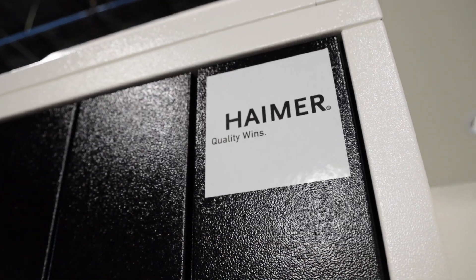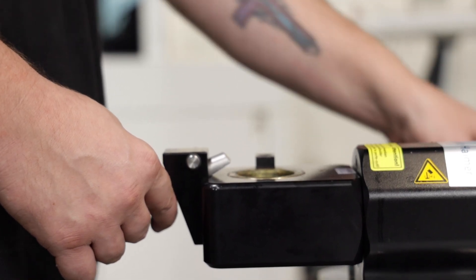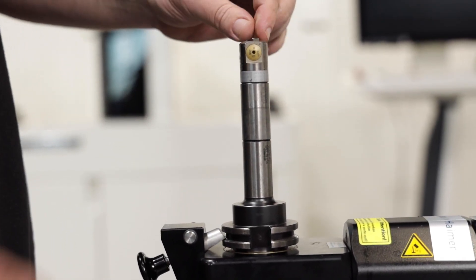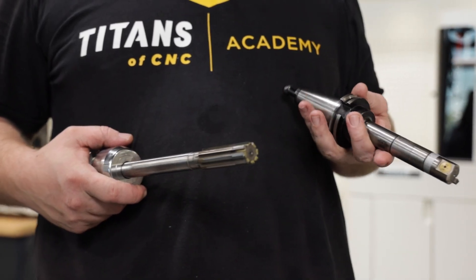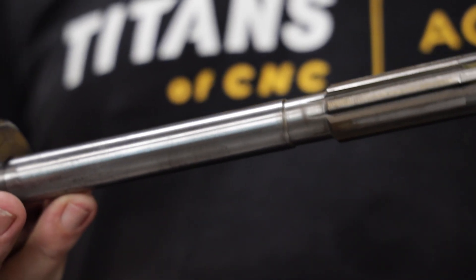So when do you want to use a reamer and when do you want to use a boring head? Well the main things to consider are the tolerance of the hole, and that means diameter and perpendicularity, the size of the hole, and the desired surface finish. A few other factors that might come into play are versatility of the tool, the cost of the tool, and the life of the tool.